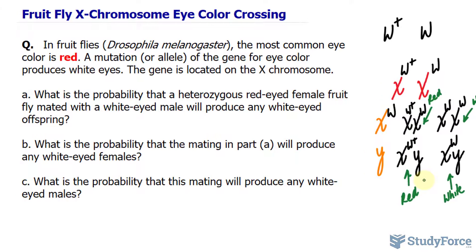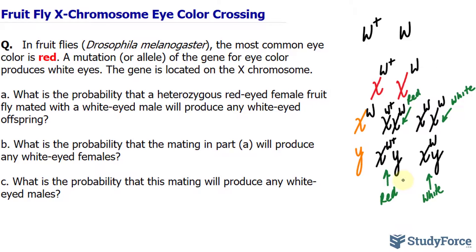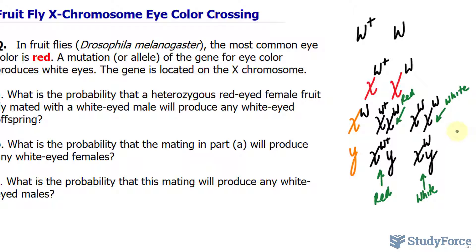Looking back at the question: what is the probability that a heterozygous red-eyed female fruit fly mated with a white-eyed male will produce any white-eyed offspring? There is a 2 in 4 chance, and reducing that gives one half. So the probability is 50%.